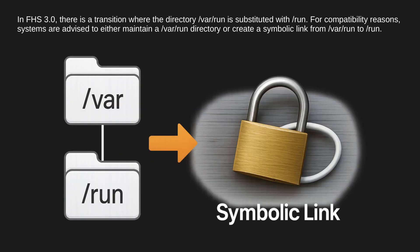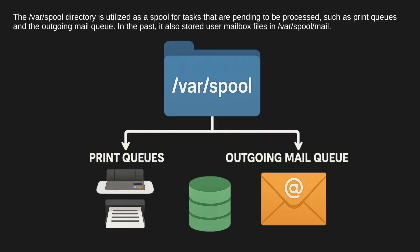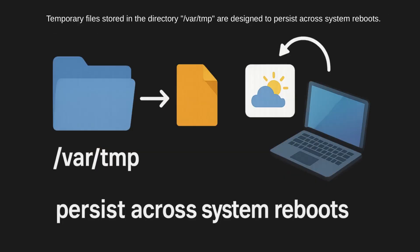In FHS 3.0, there is a transition where the directory /var/run is substituted with /run. For compatibility reasons, systems are advised to either maintain a /var/run directory or create a symbolic link from /var/run to /run. The /var/spool directory is utilized as a spool for tasks that are pending to be processed, such as print queues and the outgoing mail queue. In the past, it also stored user mailbox files in /var/spool/mail. Temporary files stored in the directory /var/tmp are designed to persist across system reboots.